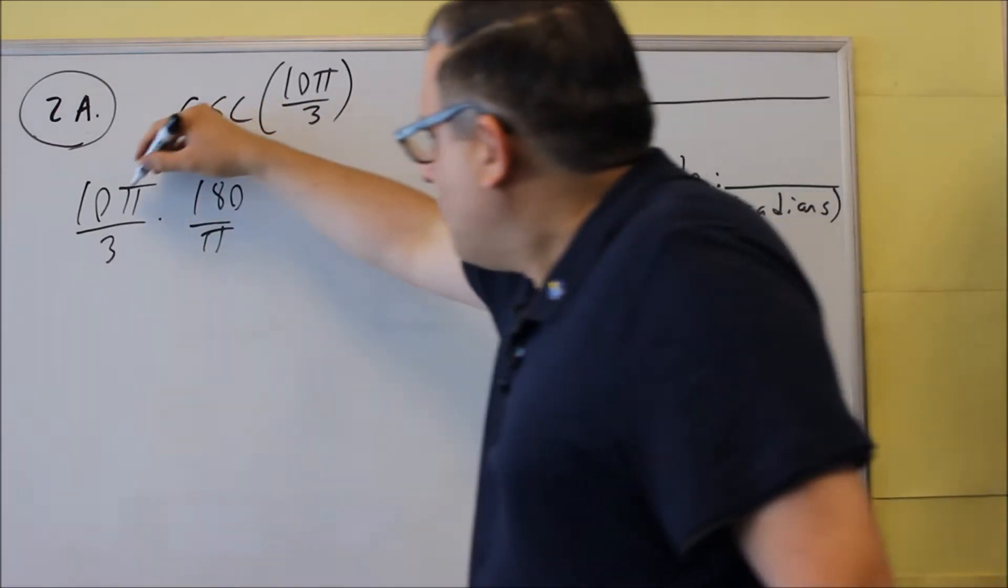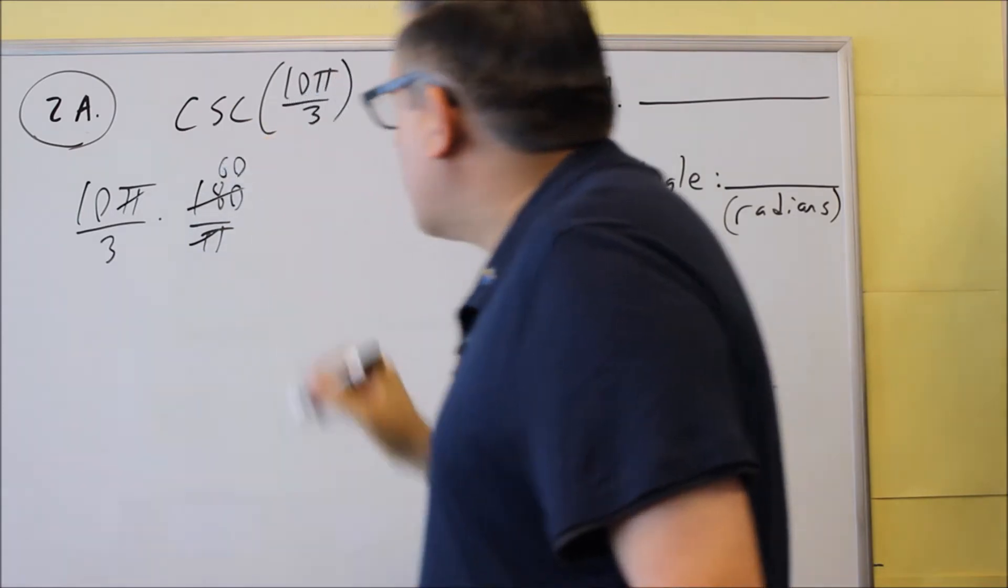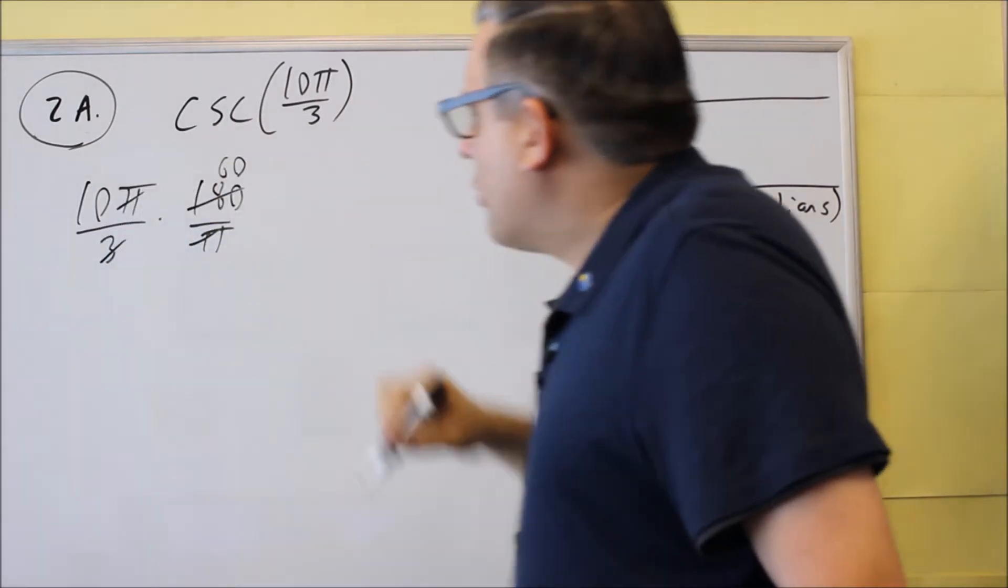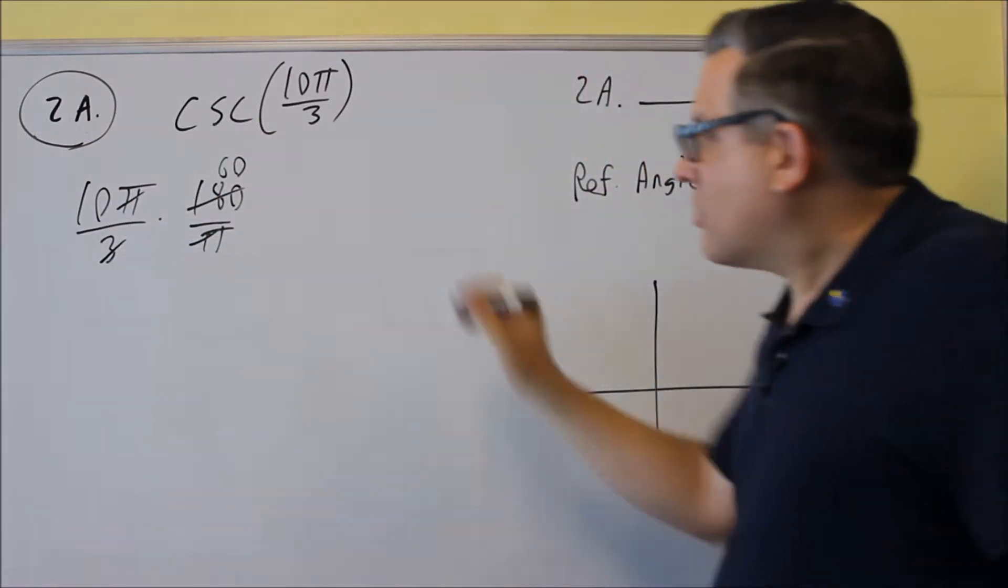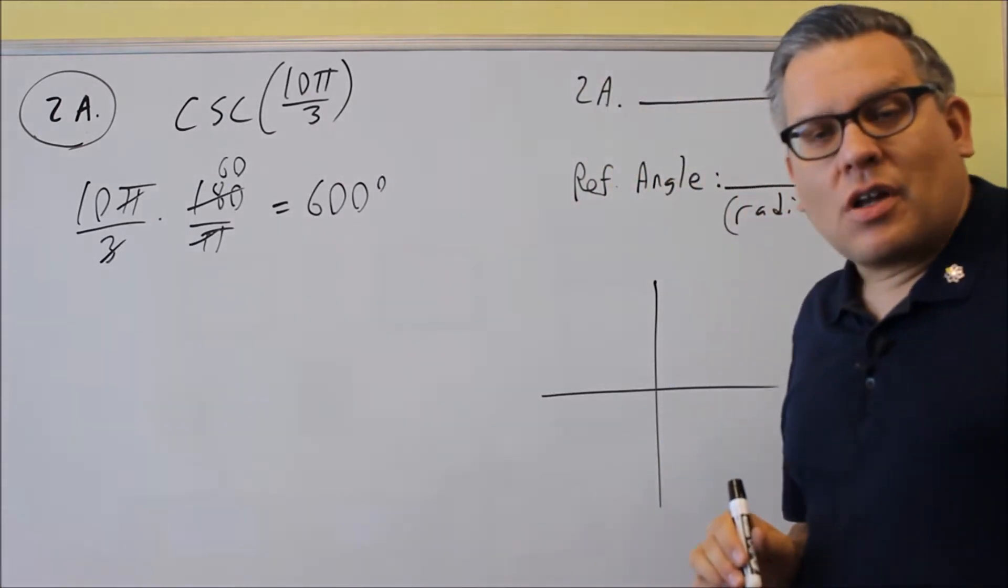The pi's are going to cancel. 3 goes into 180, 60 times, which means that we're going to get, so that one cancels out. So we just have 10 times 60, which means that we have the degree measurement. It's going to be 600 degrees.